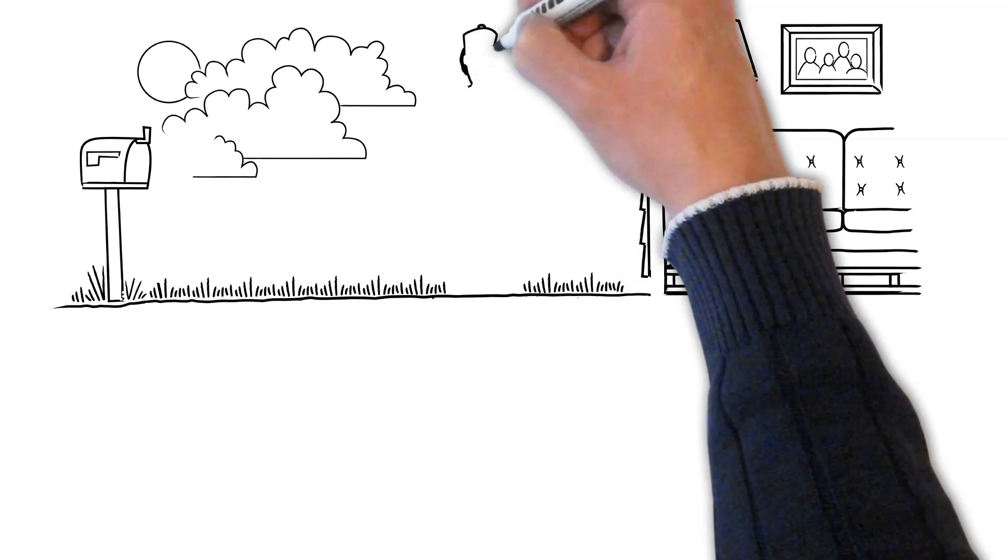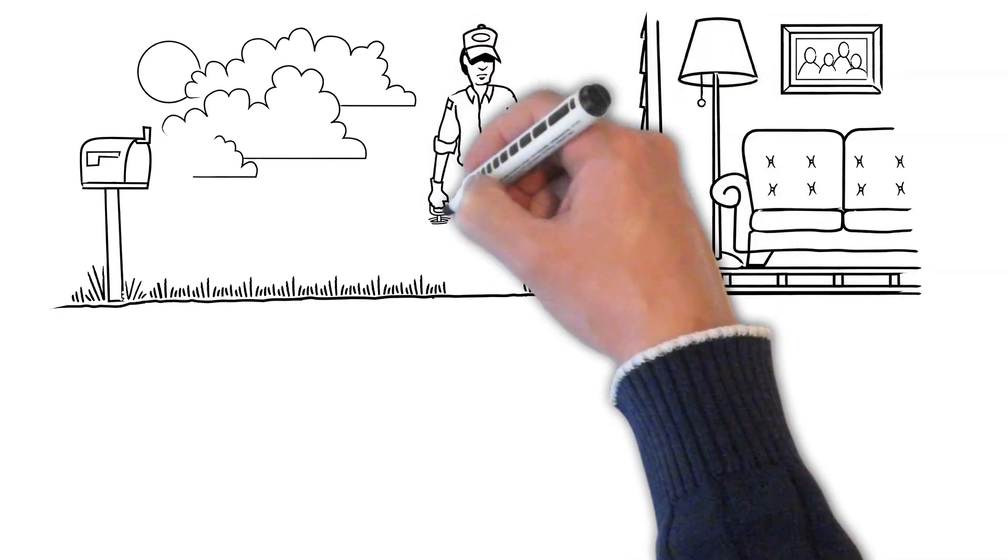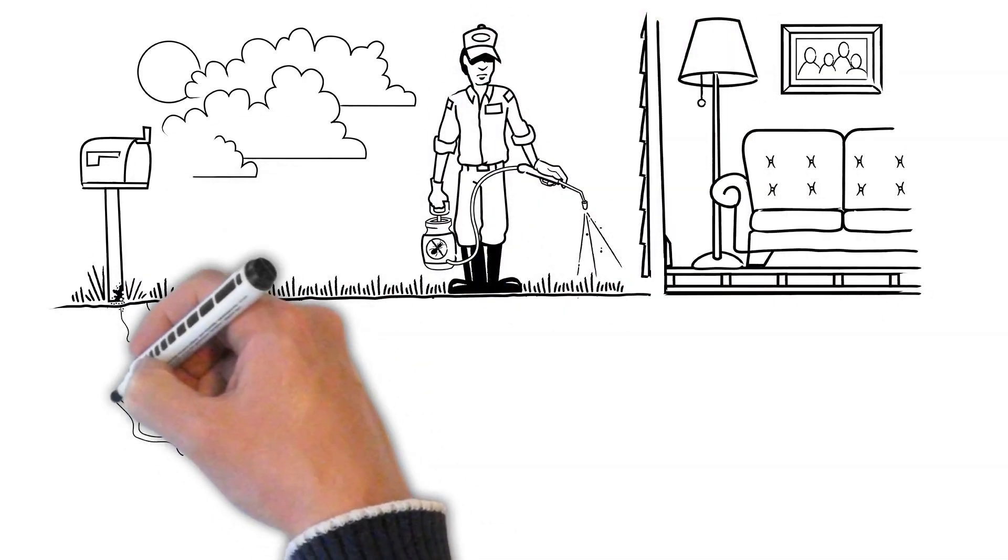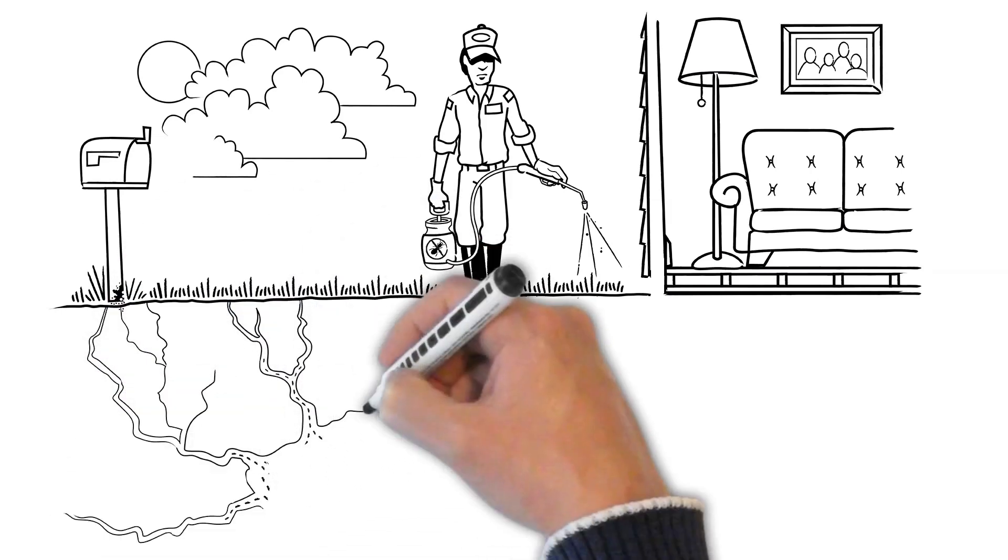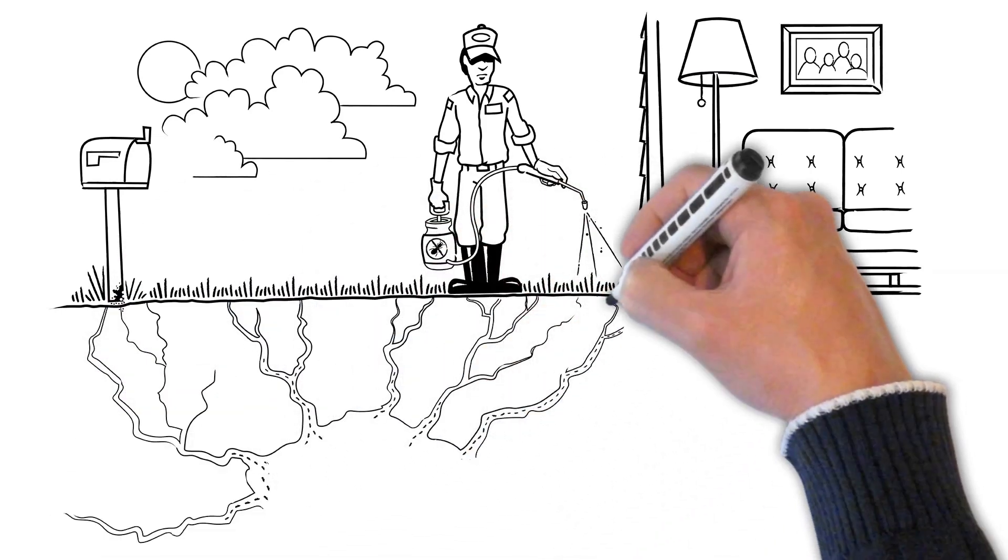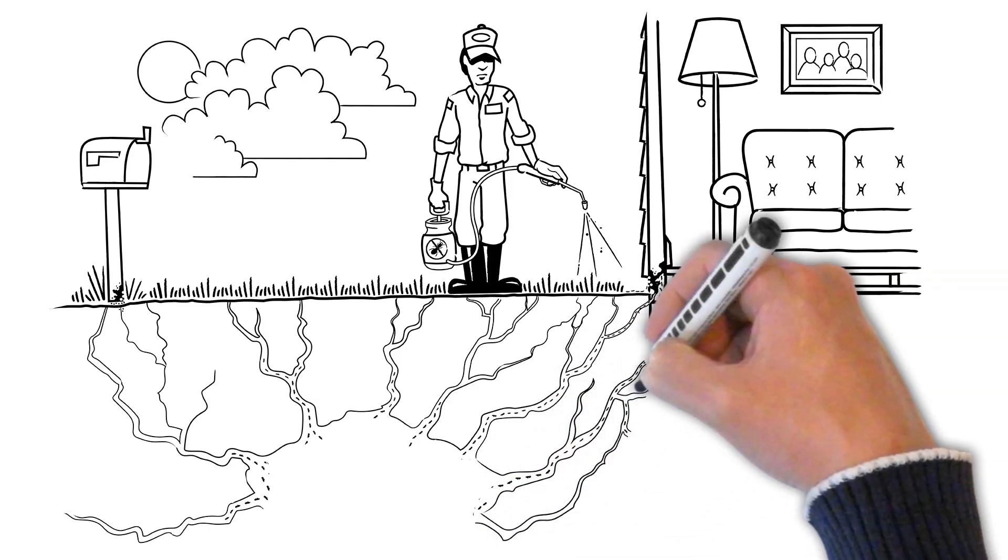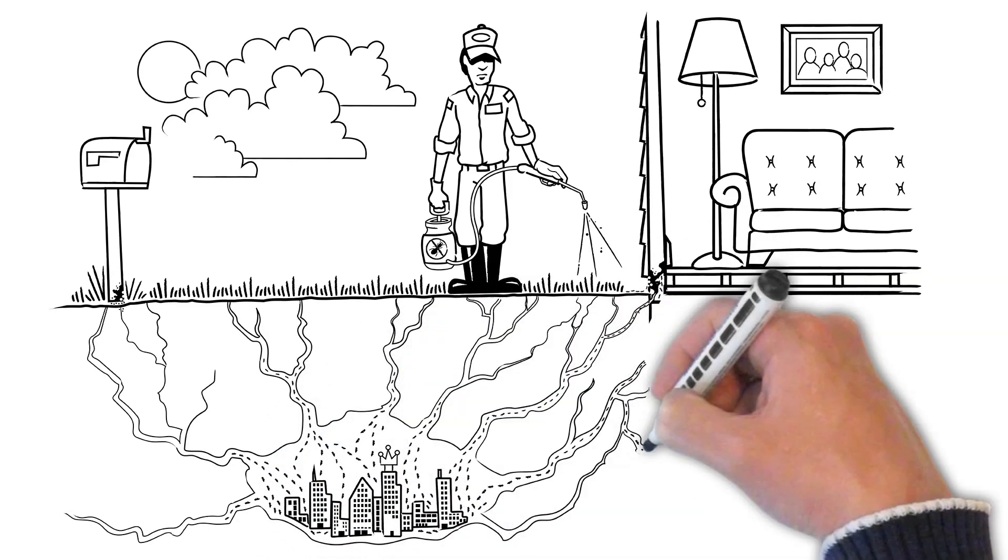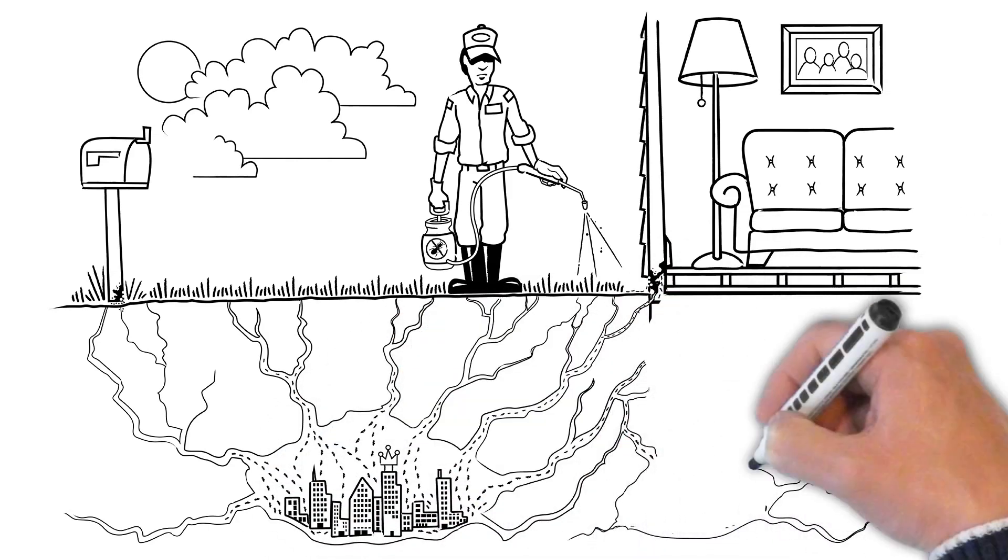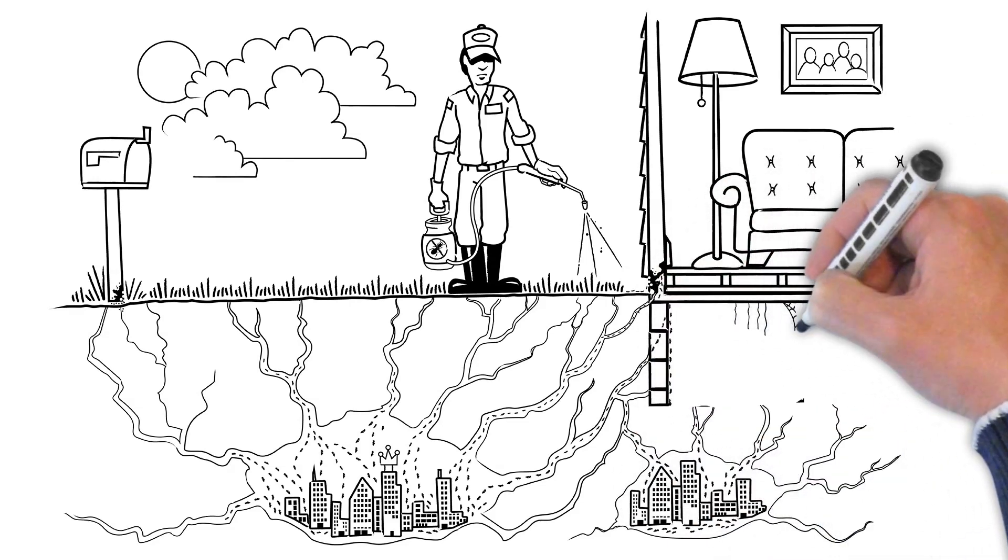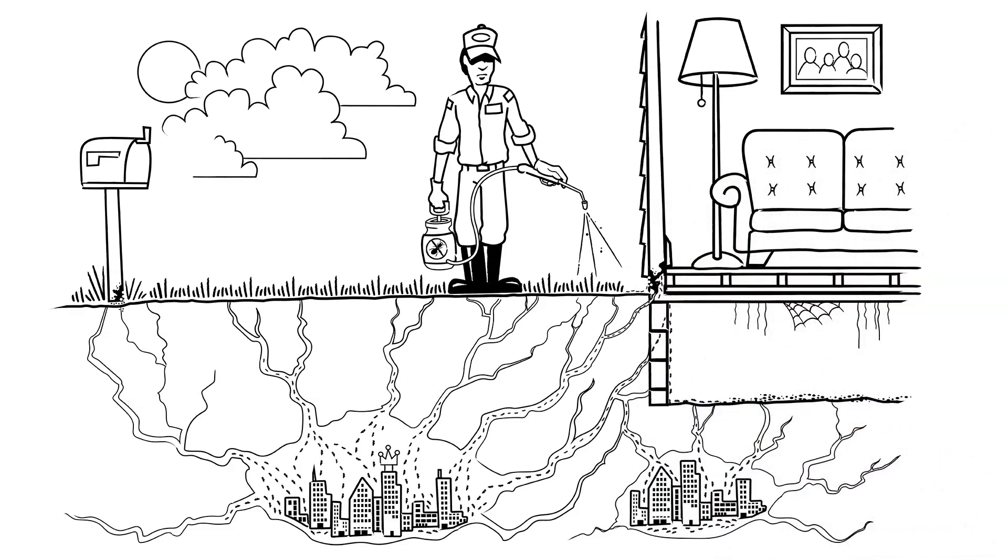Liquid treatments, whether used outside or inside, must come into direct contact with termites to kill them or to be effective as a barrier. The odds are liquid treatments are only going to kill a small fraction of the thousands of food-foraging termites, and the ones that remain can go under or around whatever barrier is formed. Likely, that colony is going to rebound.